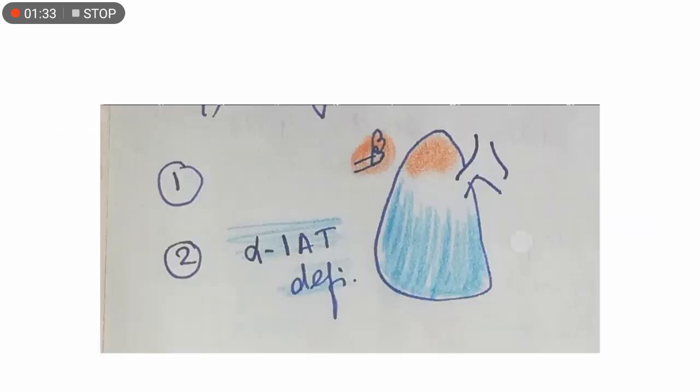The centriacinar is predominantly affecting the upper lobes and is due to smoking.